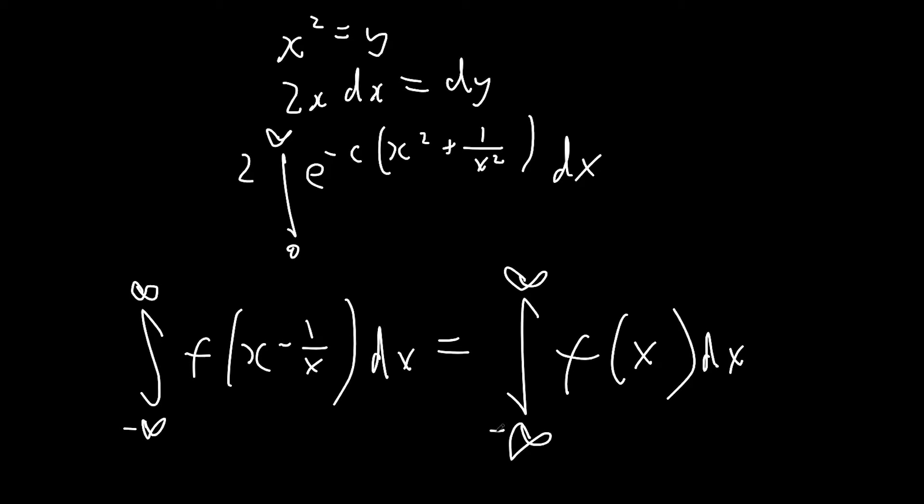So we're gonna be using this theorem and what we want to do is rewrite x squared plus 1 over x squared as a function of (x minus 1 over x).